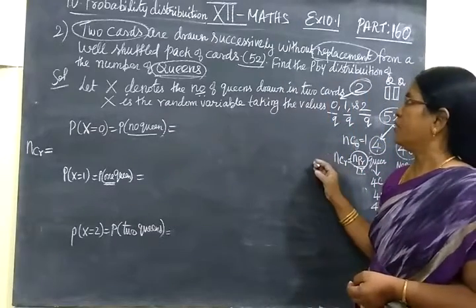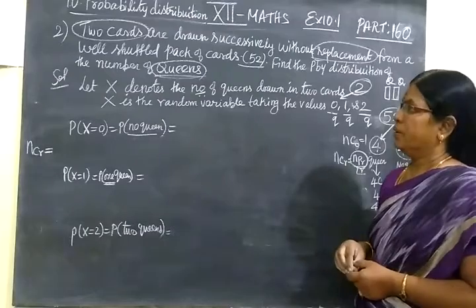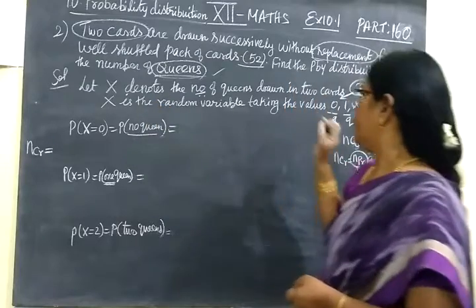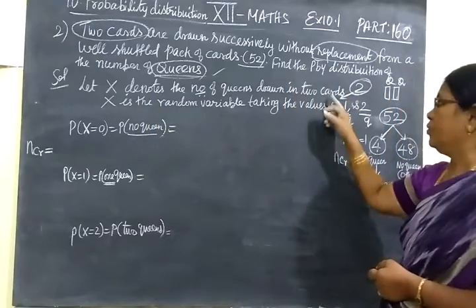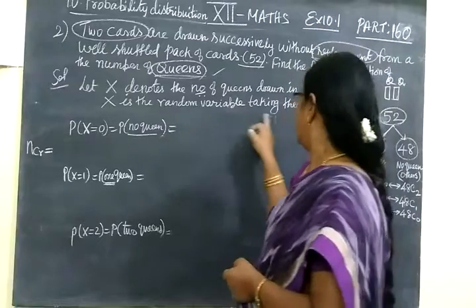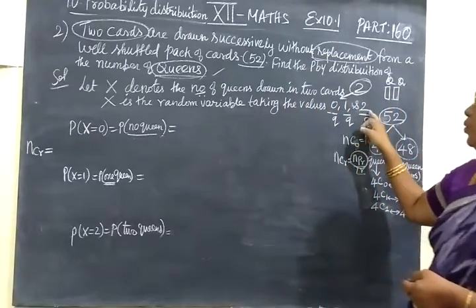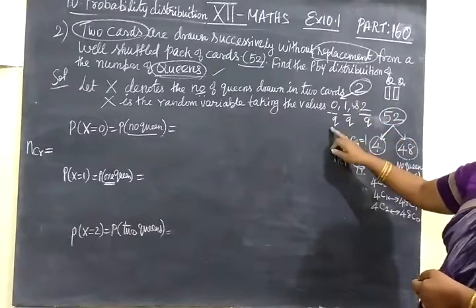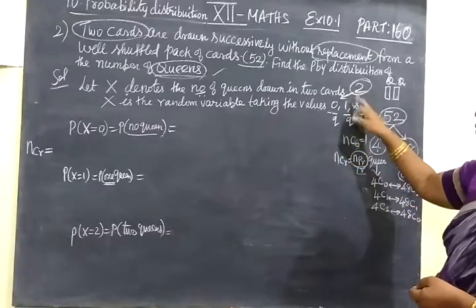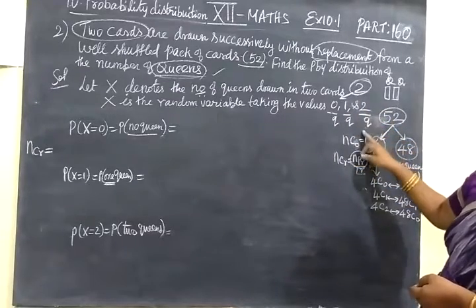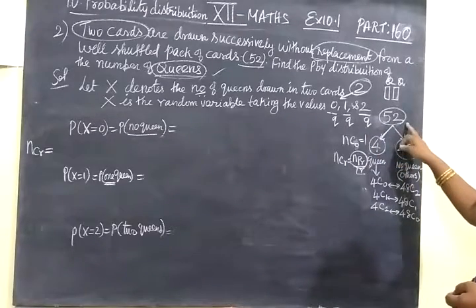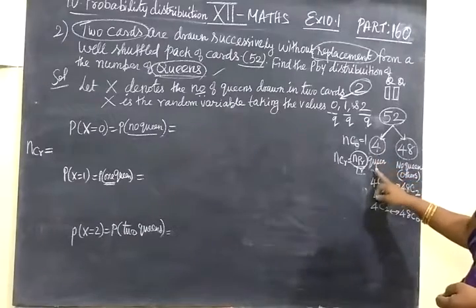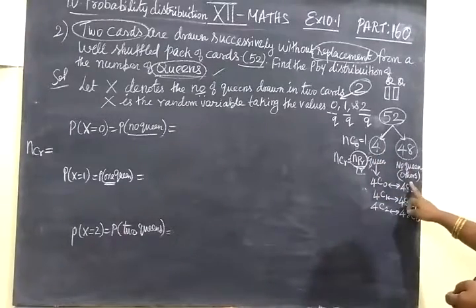After taking the cards, we are not replacing them again. The two cards should be queen cards. We are writing X denotes the number of queen cards out of two cards. X is the random variable taking the values 0, 1, or 2. Among 52 cards, 4 cards are queen cards, remaining 48 cards are other cards.